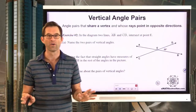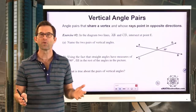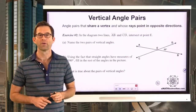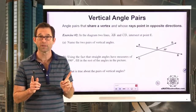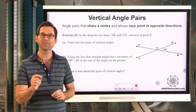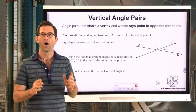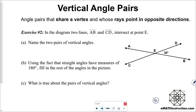Vertical angle pairs. Vertical angles are exceptionally important. They're a little bit difficult to describe mathematically, but vertical angle pairs are angle pairs that share a vertex and whose rays point in opposite directions. Exercise two: in the diagram, two lines AB and CD intersect at point E. Name two pairs of vertical angles.